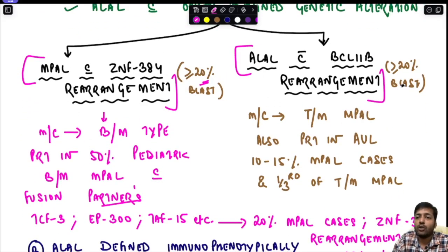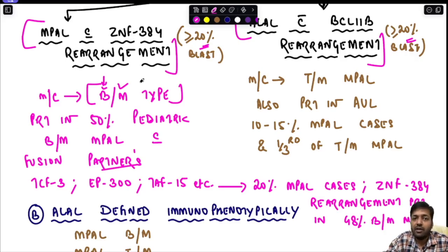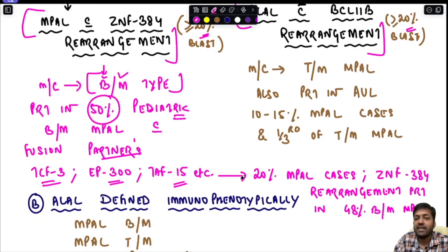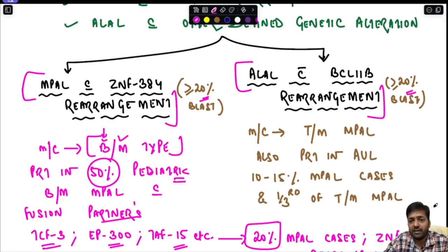For both conditions, 20% or more blasts are required. For MPAL with ZNF384 rearrangement, the most common immunophenotype is B/myeloid type. It is present mainly in pediatric cases and accounts for 50% of pediatric B-lymphoid or myeloid MPAL with fusion partners such as TCF3, EP300, TAP15, etc. This variety accounts for 20% of all MPAL cases, and ZNF384 rearrangement is present in 48% of B-lymphoid or myeloid MPAL.